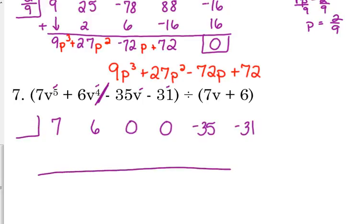All right. Let's figure out what to put on the shelf. So 7v plus 6 equals 0, subtract 6, 7v equals negative 6, divide by 7, v equals negative 6 over 7.